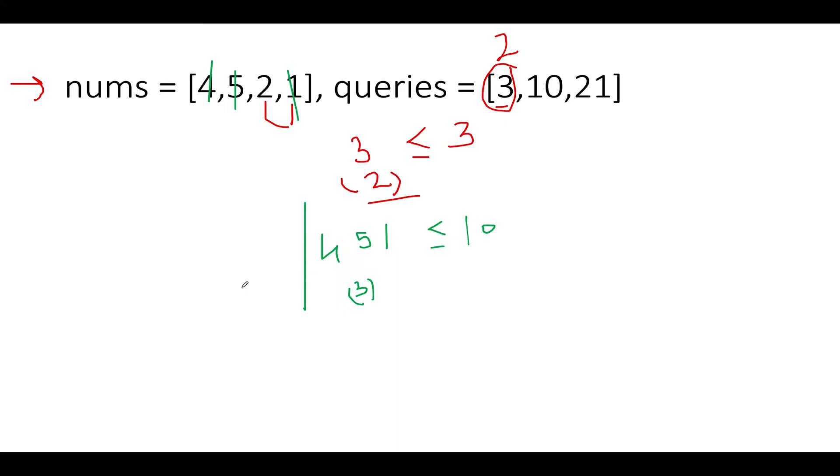The next one we have is 21. Let's check how many numbers at max can be accommodated. 4, 5, 2, and 1 - all these numbers could be easily accommodated. The total sum would be 4 plus 5 is 9, 9 plus 2 is 11, 11 plus 1 is 12. Since 12 is less than 21, all four numbers can be accommodated and the answer is 4.